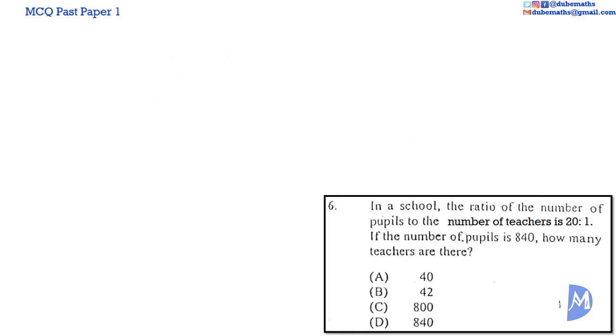The ratio of pupils to teachers is 20 to 1. So we found out that 20 shares is equal to 840.